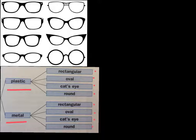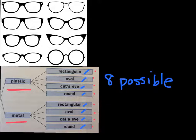Now we simply count. We have all of the possibilities here in front of us, 1, 2, 3, 4, 5, 6, 7, 8. So there are 8 possible choices, or 8 possible combinations of frames and shapes.